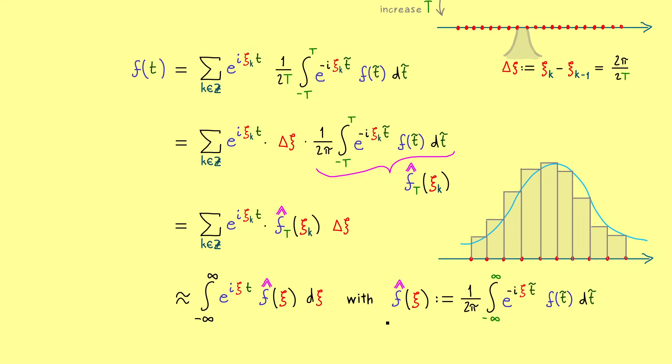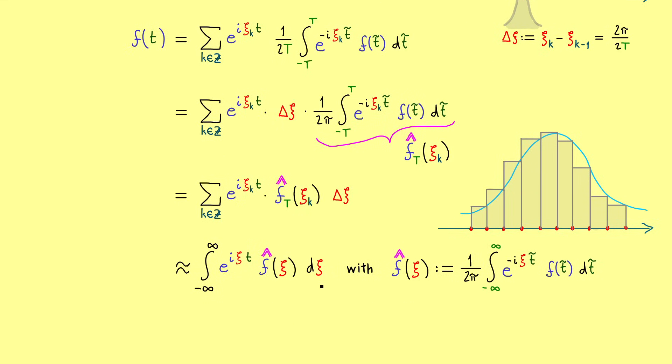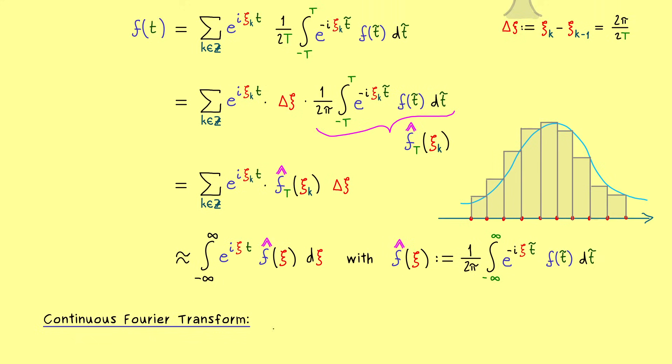So now please see, this was the motivation what should happen if we send T to infinity, which means we consider a non-periodic function f defined on the whole real number line. Then the Fourier coefficients become this Fourier transform where ξ can be any real number. And on the other hand, the Fourier series goes to a whole integral and it should still represent the original function f. Hence for non-periodic function f we would define our Fourier transform like that and then we get an inverse formula like this. And for this reason the continuous Fourier transform has exactly this form.